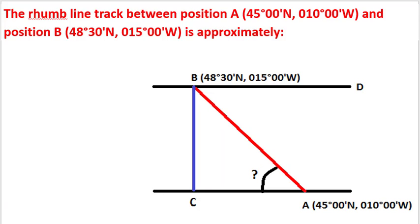Let us look at this diagram to better understand the question. In this diagram, we have position A which is 45 degrees north and 10 degrees west. Position B is located here at 48 degrees 30 minutes north and 15 degrees west. Position B is to the west of position A, and line AC is the 270-degree line.